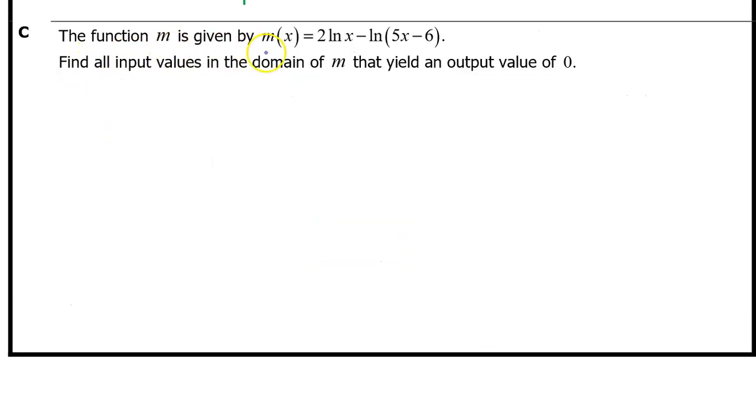Part C. The function m is given by m of x equals 2 natural log x minus natural log 5x minus 6. Find all input values in the domain of m that yield an output value of 0. Basically we need to set m of x equal to 0 and solve. As I rewrite m of x, I'm going to use the property that tells us that when you have a logarithm with a number multiplied in the front, you can move it to the exponent. So I'm going to go straight to natural log of x squared minus the natural log of 5x minus 6 and then equals 0. This will be easier to solve if we move the second logarithm to the other side of the equation by adding it to both sides, so we will have the natural log of x squared is now equal to the natural log of 5x minus 6.